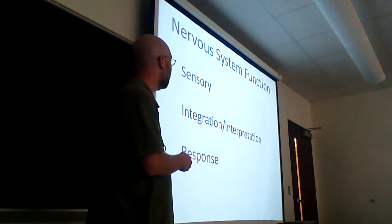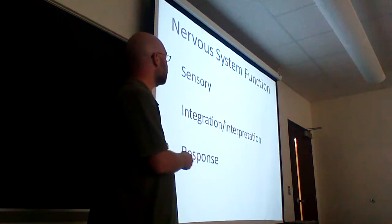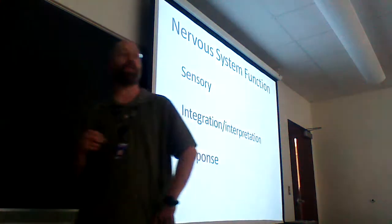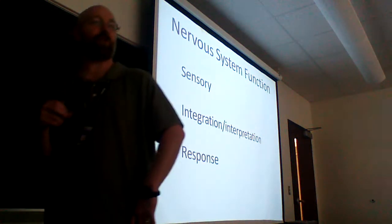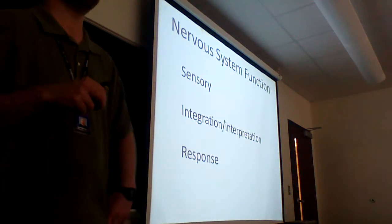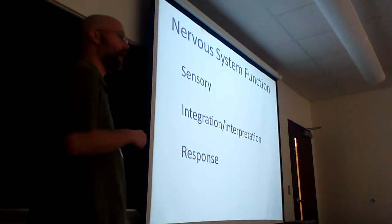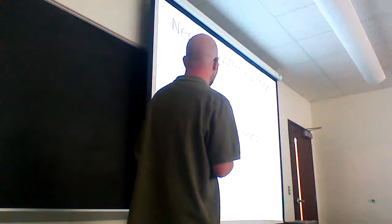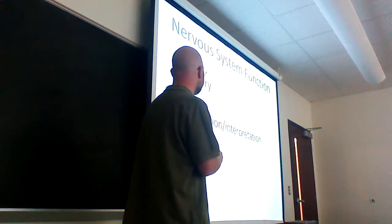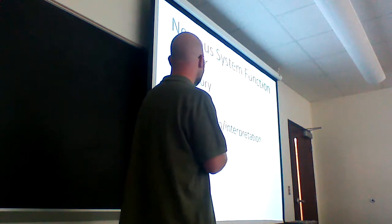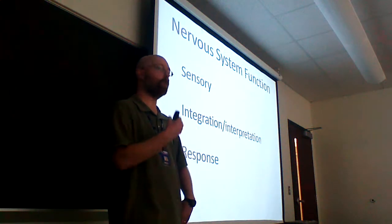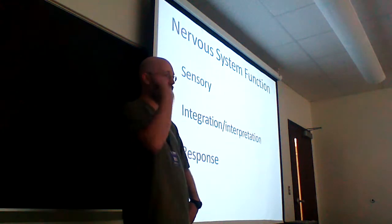What does it do? The nervous system is your main sensory apparatus. If you can detect it, chances are the nervous system is what is actually doing the detecting. That information is going to be transmitted to the heart of the nervous system — the central nervous system, your brain and your spine.